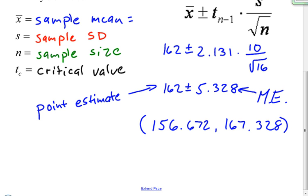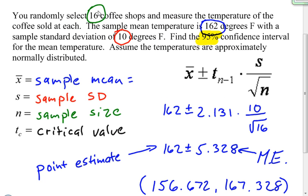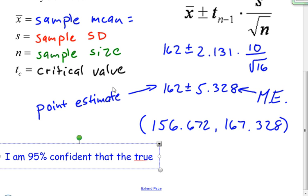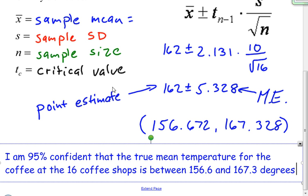But I'm not quite finished yet. The last thing you should always do when you find a confidence interval is you should also write out what the confidence interval means. That means interpret the confidence interval. So in this case, if I go back up, remember I'm finding a 95% confidence interval for the mean temperature for the coffee at the 16 coffee shops. So this is how I would type it. I am 95% confident that the true mean temperature for the coffee at the 16 coffee shops is between 156.6 and 167.3 degrees Fahrenheit.